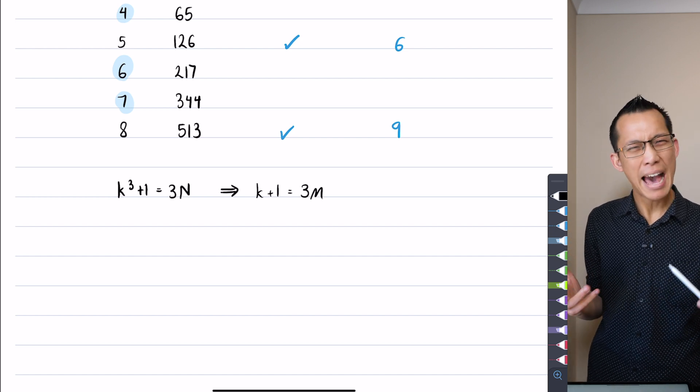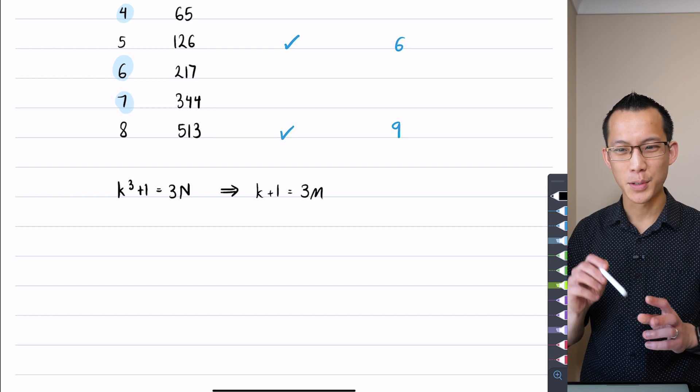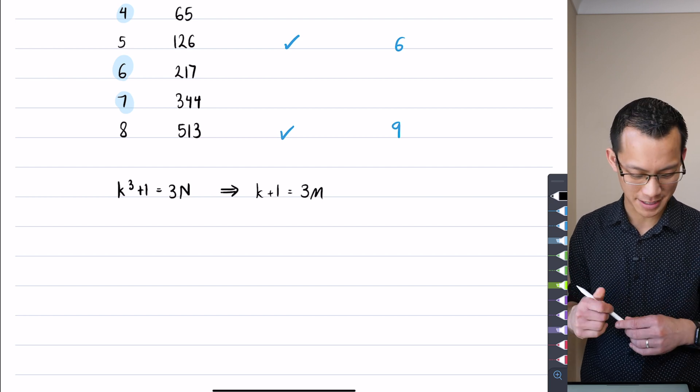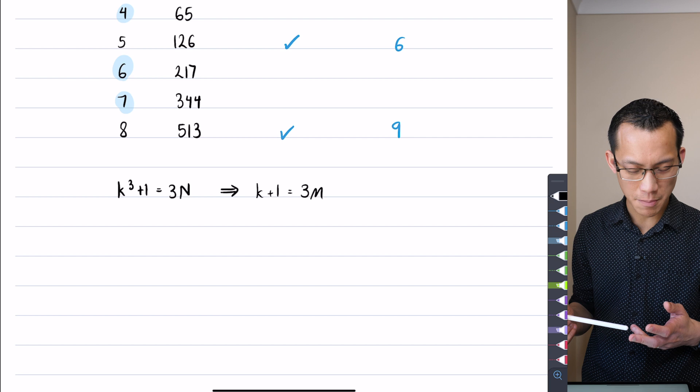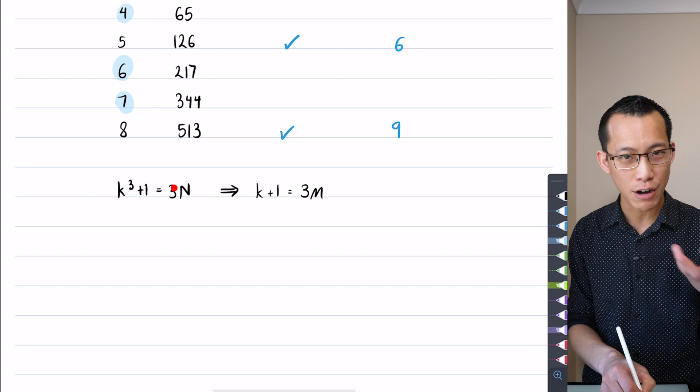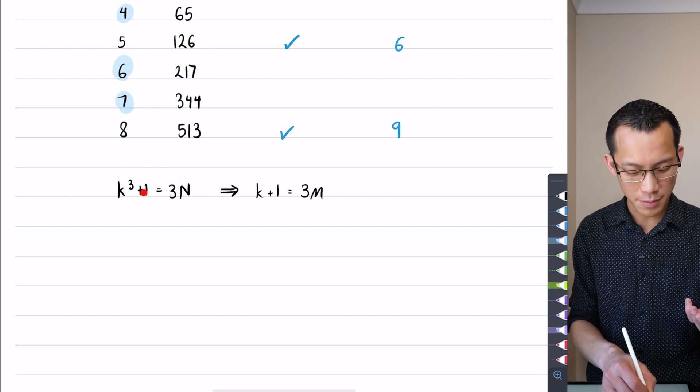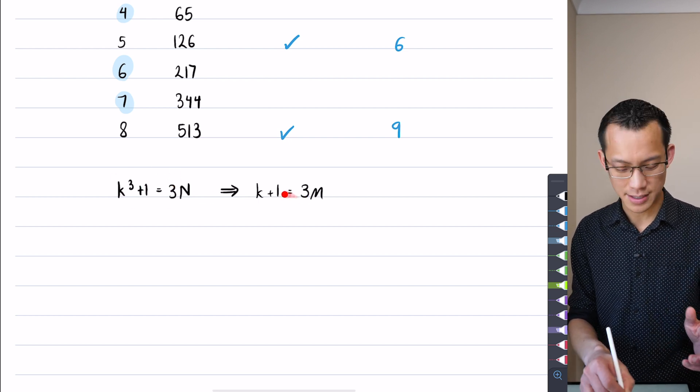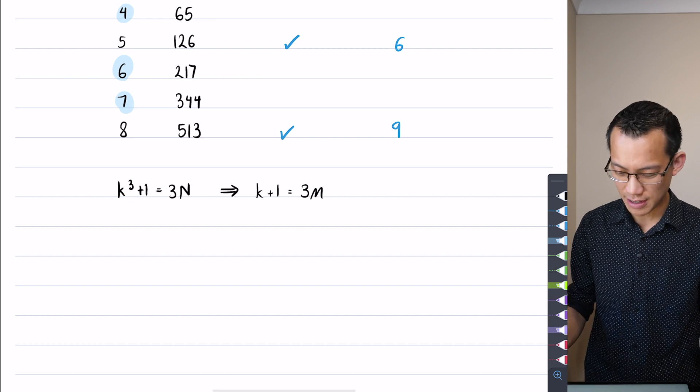Well, if k³+1 was equal to 3 times some number, and then that implies that k+1 is also equal to 3 times some number, that's how I would go at it via a direct proof. But how do you even make progress on this? I even saw some rooms trying to wrestle with this.